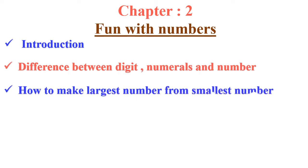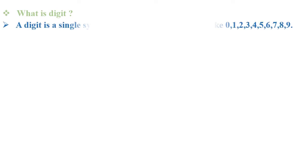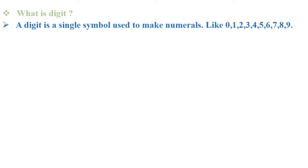Then, how to make the largest number from the smallest number. We have to study number names and writing numerals — we can also say writing figures. Do you know what is the digit, number, and numerals? Let us see. What is a digit? A digit is a single symbol used to make the numerals. Like 0, 1, 2, 3, 4, 5, 6, 7, 8, 9 — these 10 digits we are using in our everyday life to count.